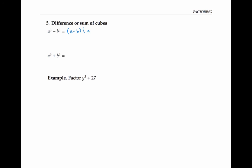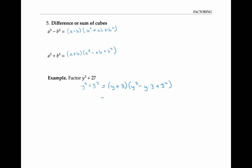There is however a formula for both a difference of cubes and a sum of cubes. The difference of cubes: a cubed minus b cubed equals a minus b times a squared plus ab plus b squared. The sum of cubes is pretty much the same — you just switch the signs — giving a plus b times a squared minus ab plus b squared. For example, y cubed plus 27 is y cubed plus three cubed, a sum of two cubes. Plugging in y for a and three for b gives y plus three times y squared minus three y plus nine.